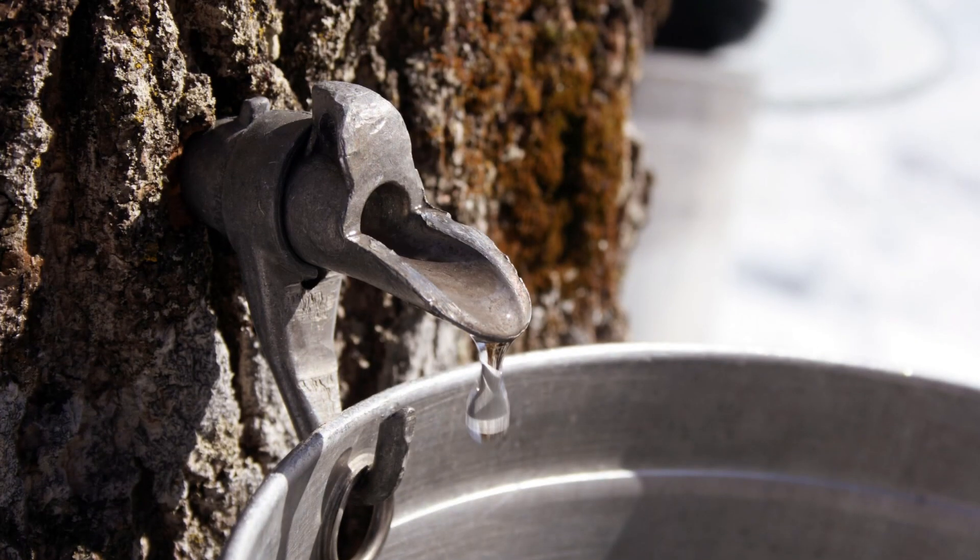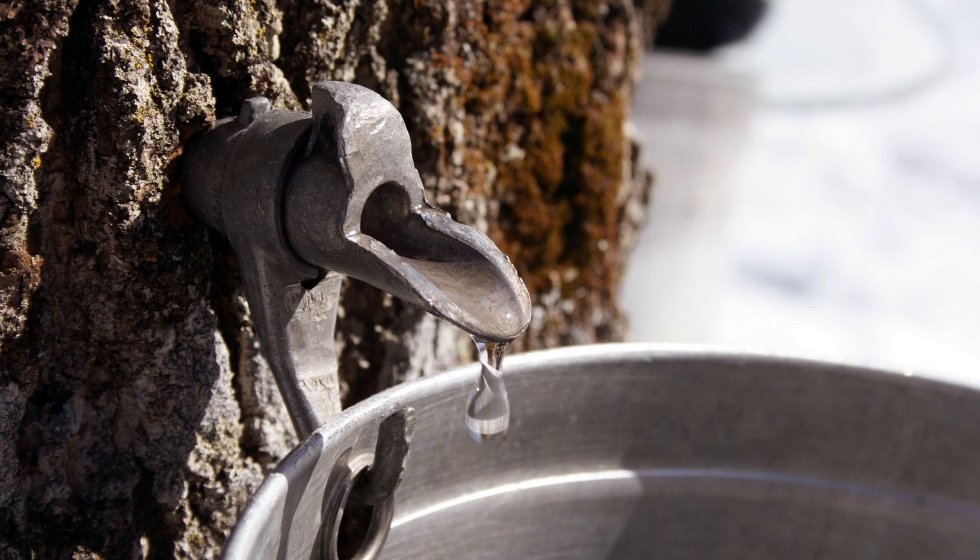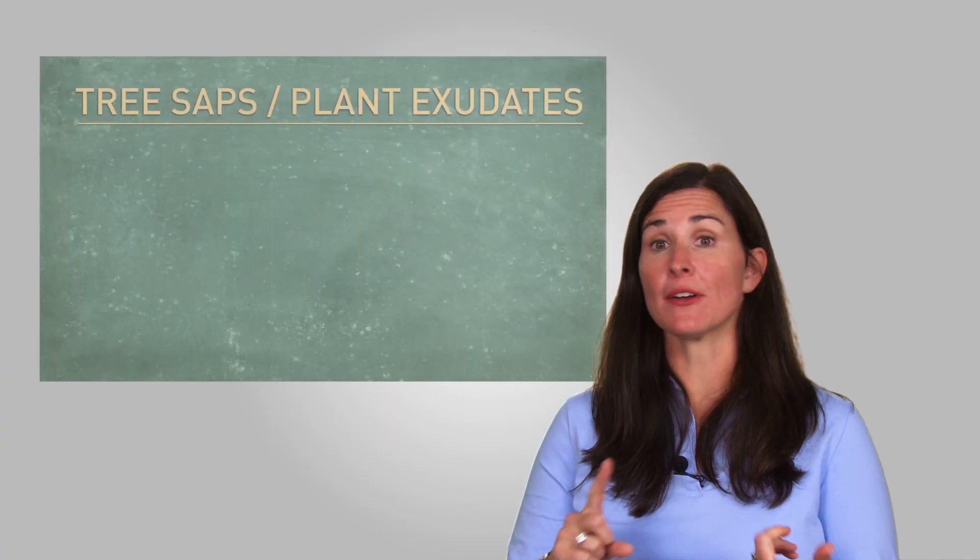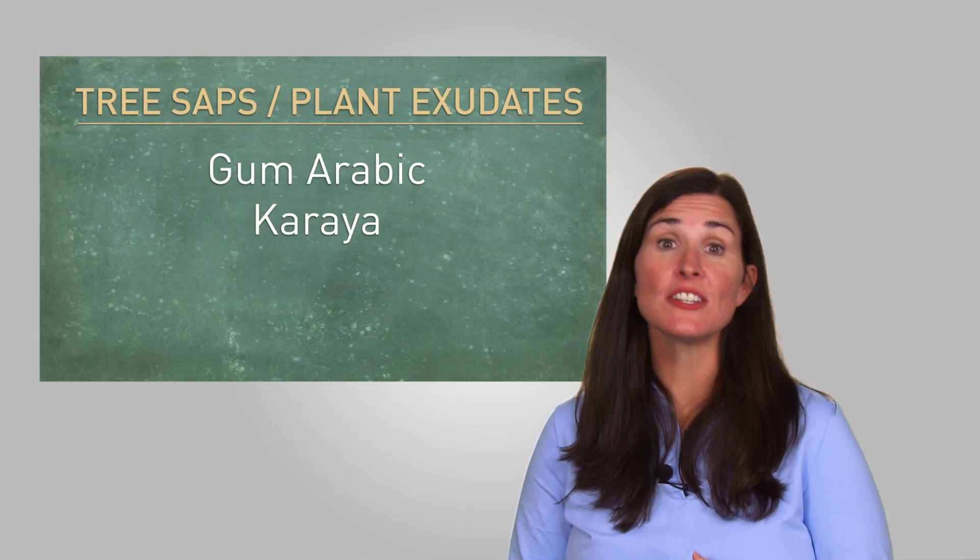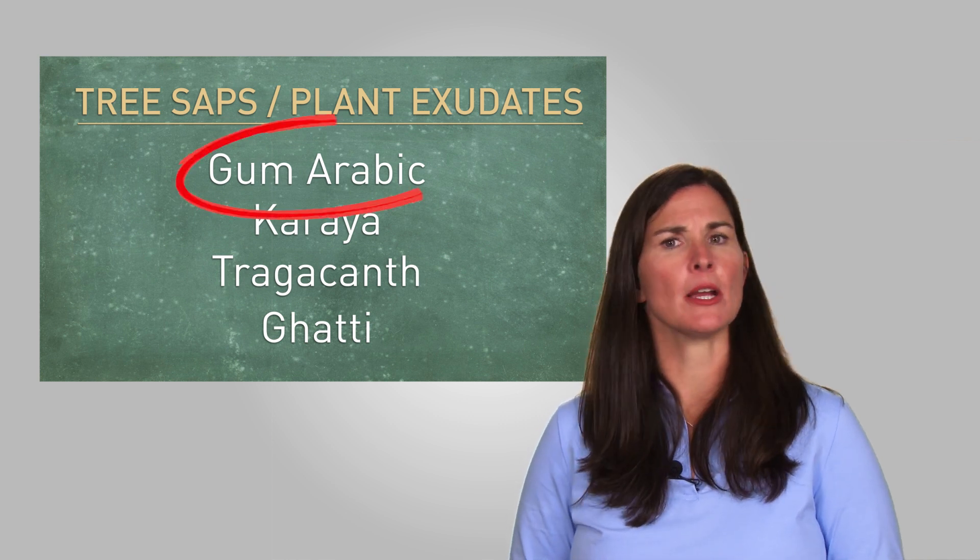For example, what you see when they harvest maple syrup. Gums included in this category are gum arabic, coria, tragicanth, and gaddy, the most popular of these being gum arabic.